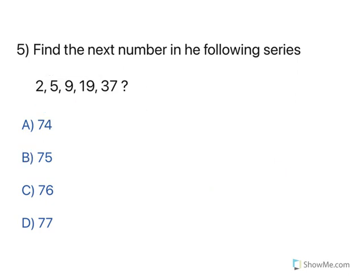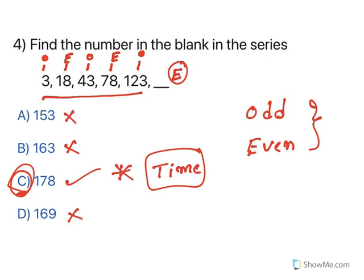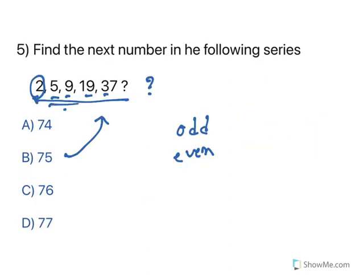Also notice that in this series, leaving the first two numbers, all others are odd. So the next number should be odd, allowing you to narrow down the options using the odd-even principle. Combined with deducing the multiplication pattern, you can confirm the answer is B (75). With experience, you can quickly eliminate wrong answers using odd-even observation before fully working through the pattern.